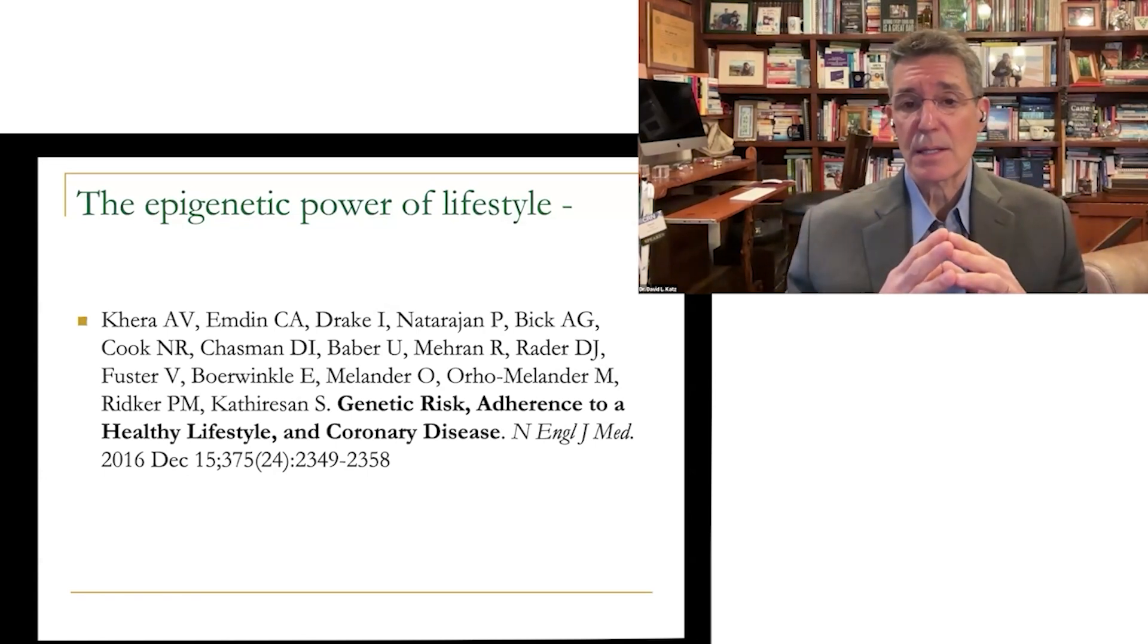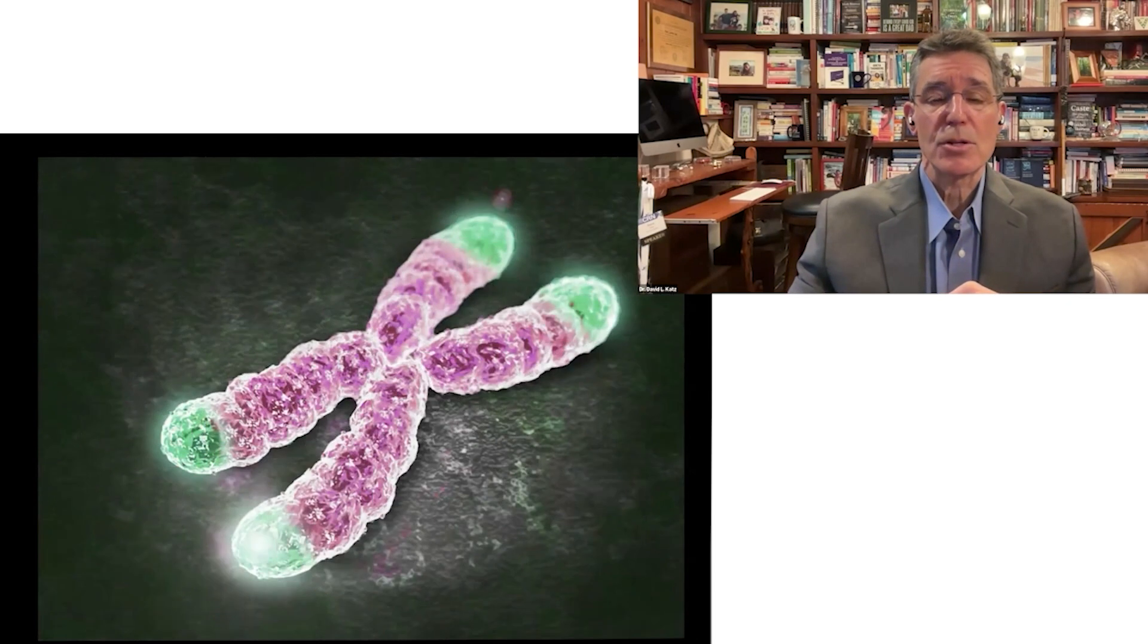And the answer was a 50% reduction in the rate of all that bad stuff. So acute coronary events of any kind relative to a control group in the group that got the lifestyle intervention, despite having particularly high risk genes. So another indication, DNA is not destiny, but dinner is. We can modify the behavior of our genes. We can modify our genetic risk with lifestyle intervention.